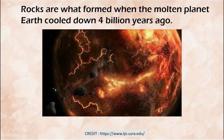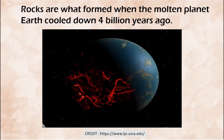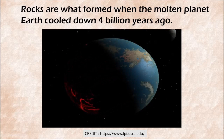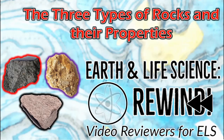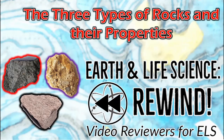Rocks are what formed when the molten planet Earth cooled down 4 billion years ago — from being a hell-like planet cooling down into a rocky planet containing water. From magma being cooled down, there are now hundreds of varieties of rocks formed through various Earth processes, categorized into three groups and recycled in the planet. What are rocks, what are their identifying characteristics, and how do we group them into three?